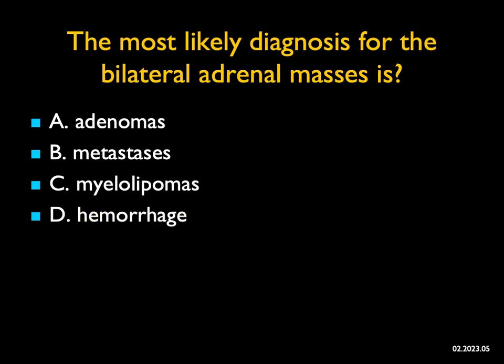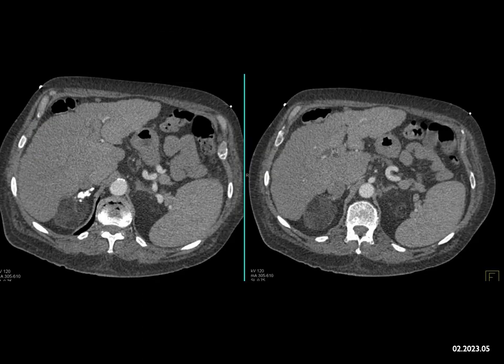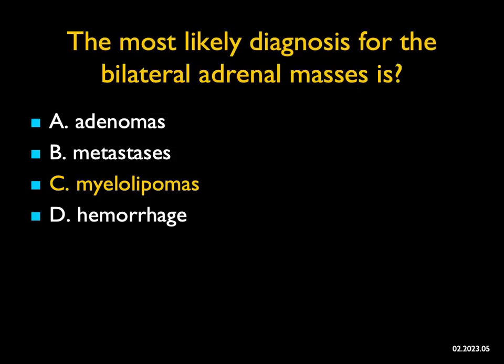The most likely diagnosis for the bilateral adrenal masses in this patient is — you can see there are bilateral masses that have fat attenuation. The one on the right has calcification, but the fat density is key. Adenomas measure up to minus 10 perhaps; this would measure minus 70. Metastases, even from liposarcoma, are not going to be fatty tumors, and hemorrhage is high density. This is a classic example of bilateral adrenal myelolipomas. Myelolipomas are usually unilateral but can be bilateral. They can calcify — more commonly punctate calcifications, but at times the calcifications can be more extensive.